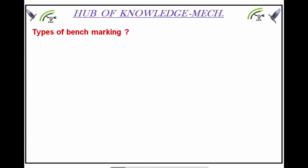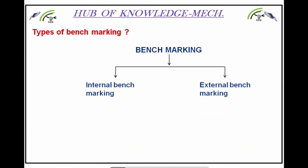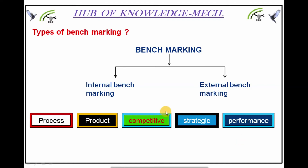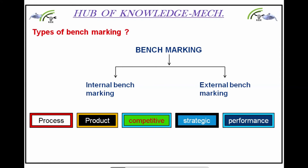Now let's discuss types of benchmarking. Benchmarking has two types: internal benchmarking and external benchmarking. It is further categorized into process, product, competitive, strategic, and performance benchmarking. Process benchmarking is for improving process; product benchmarking is for improving product quality or reducing product cost; competitive benchmarking is for beating your competitor; strategic benchmarking means creating an internal goal and developing a strategy to achieve it using internal employees; and performance benchmarking is to improve the performance of your process or team.